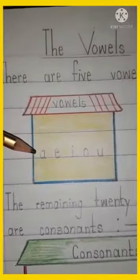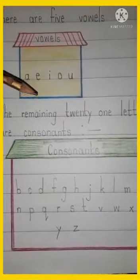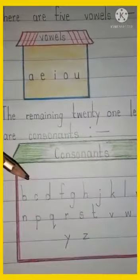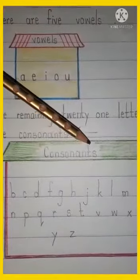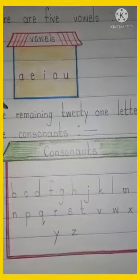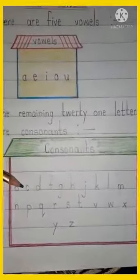So all these five letters are also called vowels. These are called vowels: A, E, I, O, and U. And the remaining 21 letters who used to live with their mother — that house is called Consonant. So these 21 letters are called consonants. So here we have the house of vowels and the house of consonants.